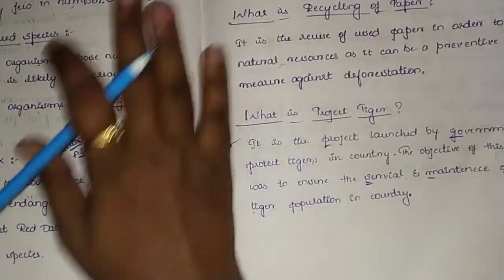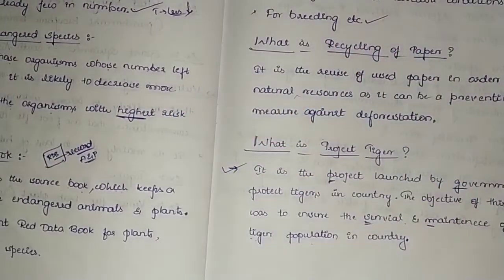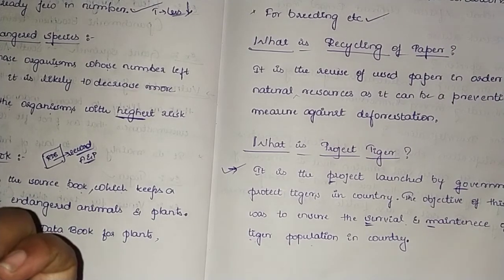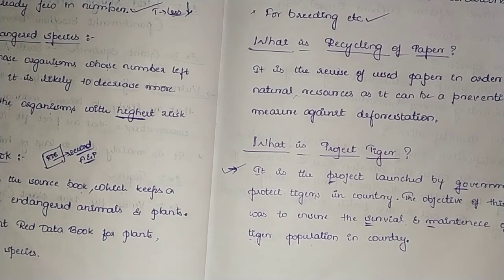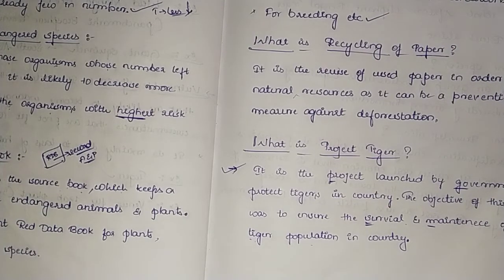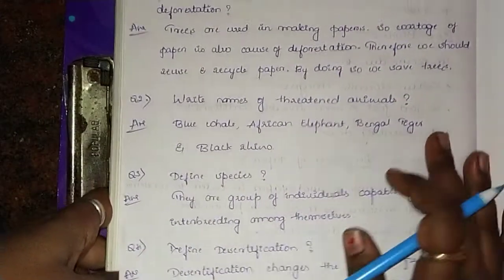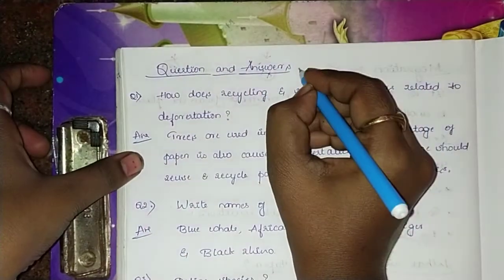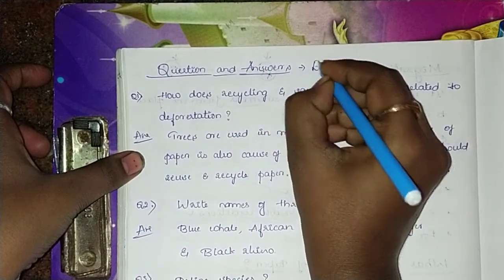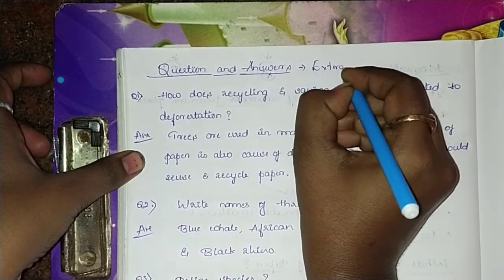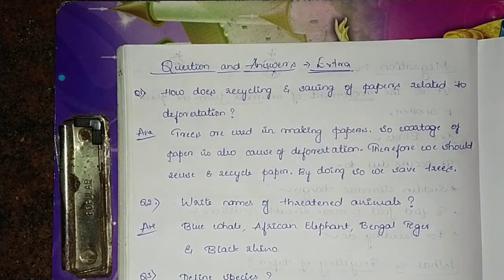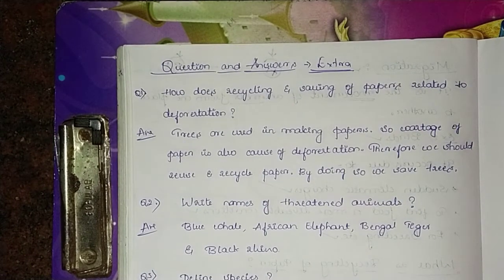This completes the chapter on conservation of plants and animals. Now let's solve some problems based on this chapter. I want you children to write these questions and answers in your homework books — these are the extra questions and answers.